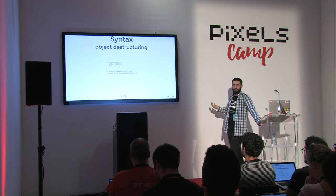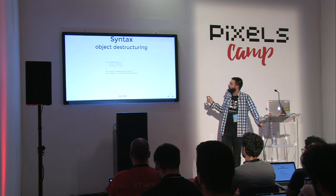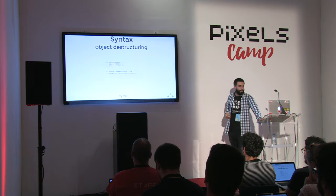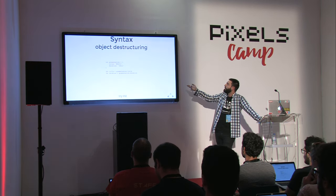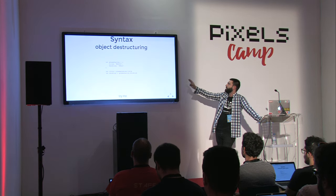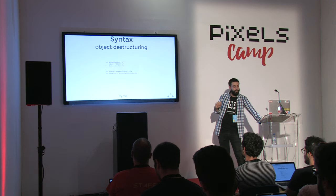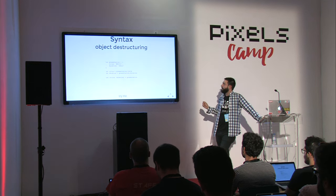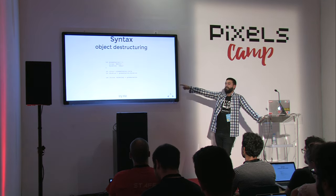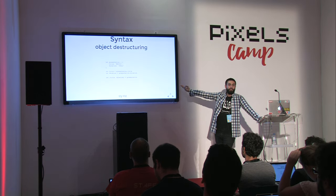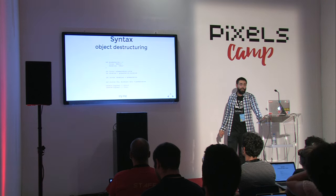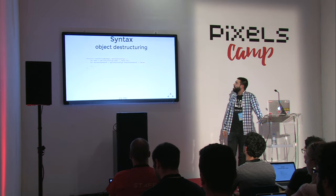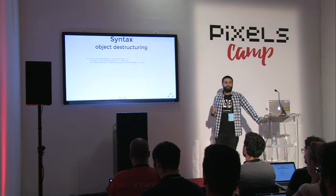Object destructuring is the opposite scenario. Imagine you receive an object from a service and want to extract its properties into variables. In ES5 you'd write `let title = presentation.title; let duration = presentation.duration`. With destructuring assignment you can do this in one line: `let { title, duration } = presentation`. Much easier and more readable. You can even rename those variables to names you prefer.